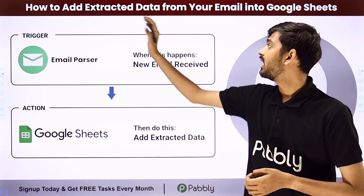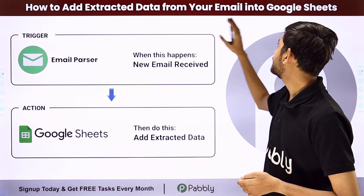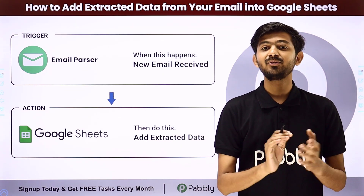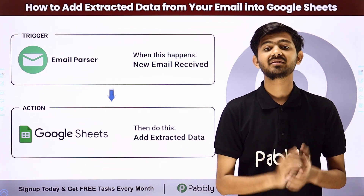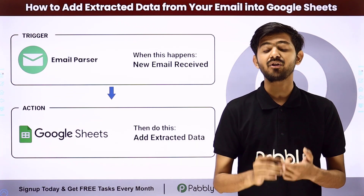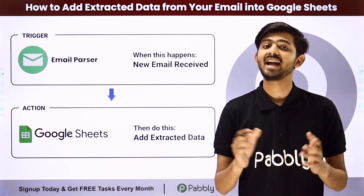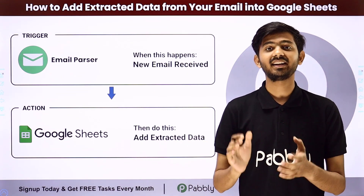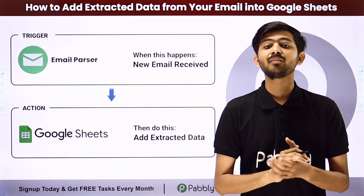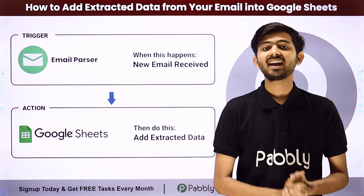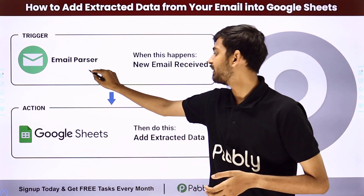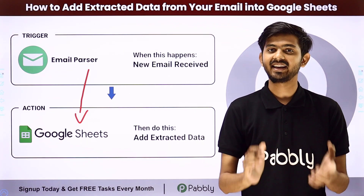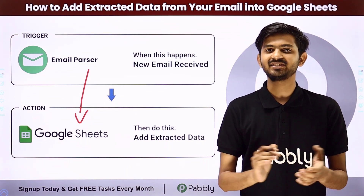Hello everyone. Today our topic is how to add extracted data from your email into Google Sheets. Whenever I receive a new email, I'm going to extract data from that email, such as email content, email subject, sender name, etc. For extracting the data, I'm going to use email parser, and after extracting the data, I'm going to add these details automatically in my Google Sheet. I'm going to build a simple connection between email parser and Google Sheet using Pably Connect, which is an amazing software for automation and integration.